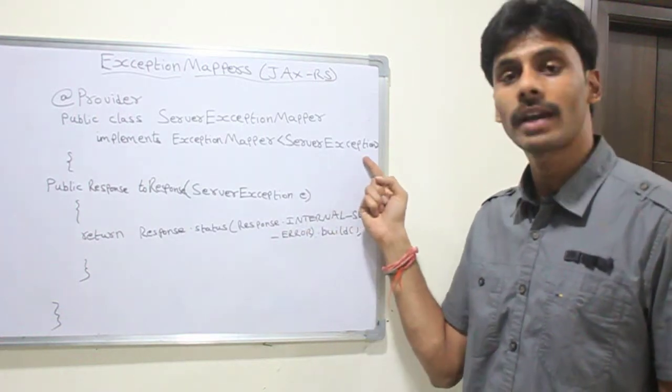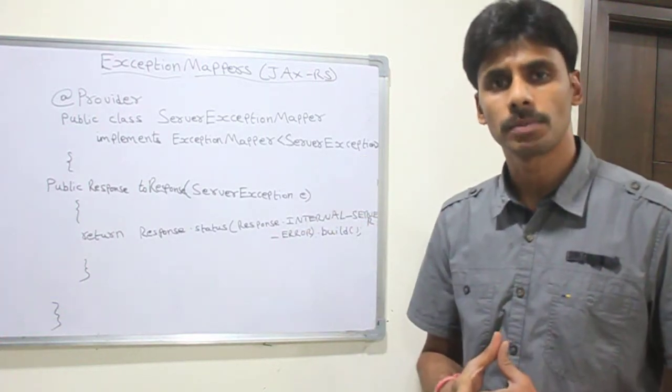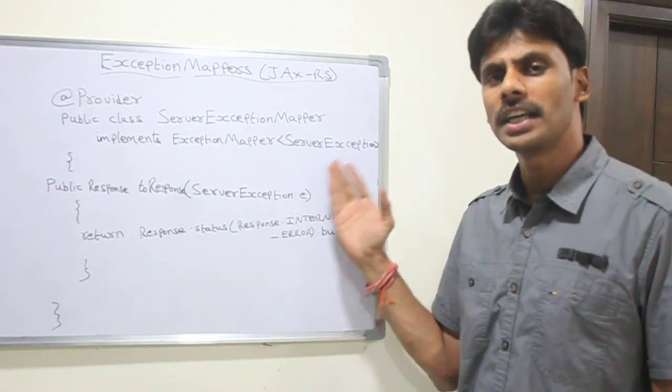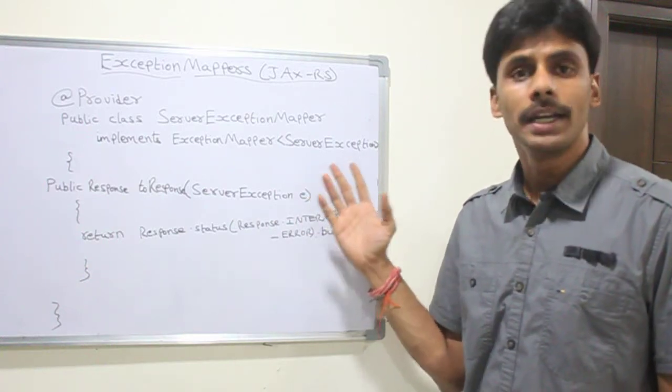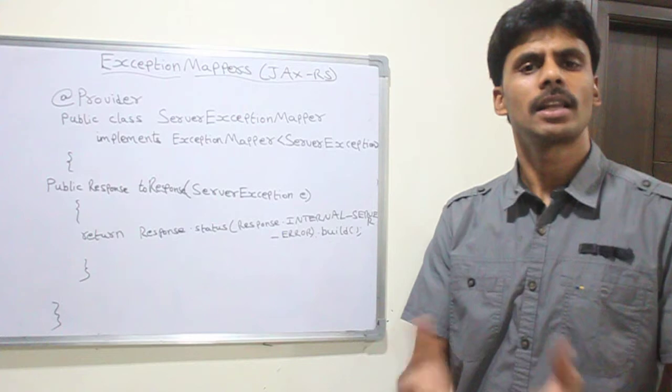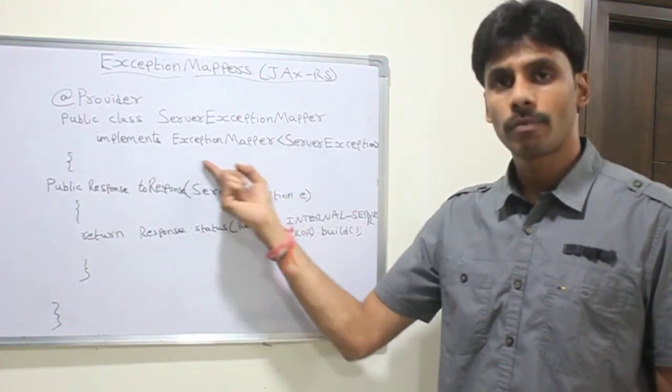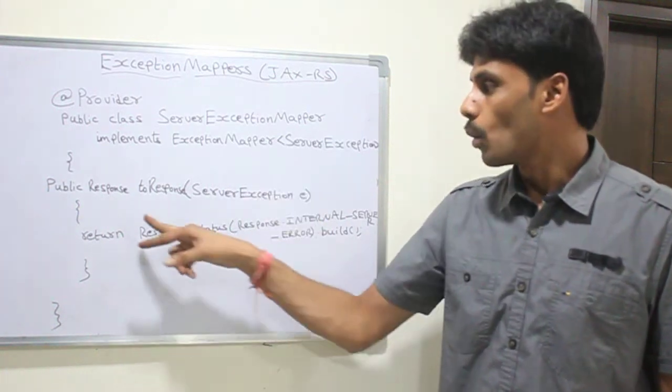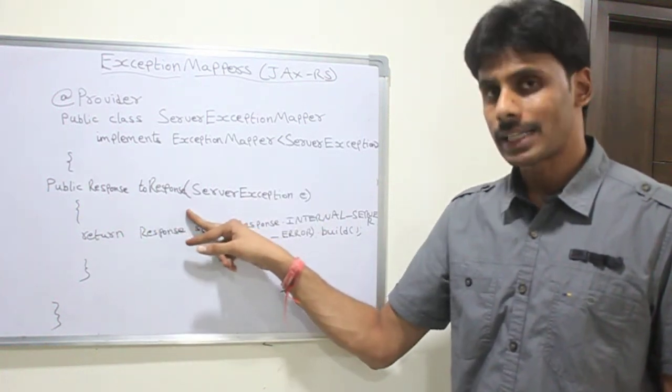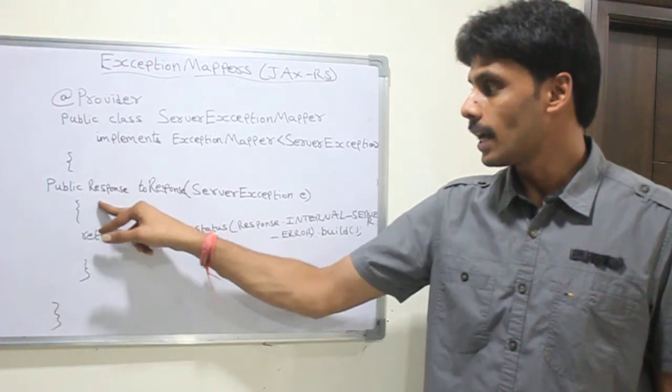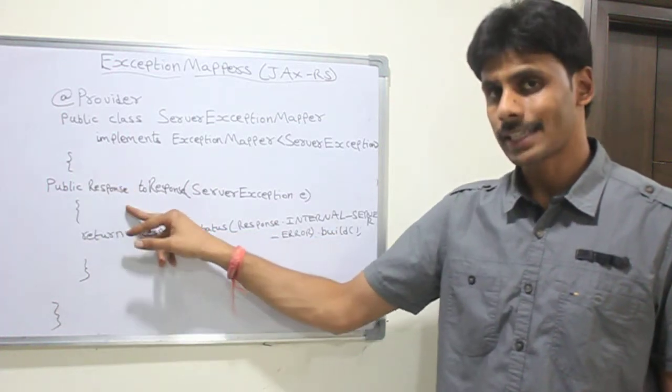In my case, I am handling a ServerException which is an internal application exception. You can handle EntityNotFoundException, EntityExistsException, or any other business exception of your own. You just define it here as a generic type for ExceptionMapper and you override the method called toResponse which returns a response object in the JAX-RS API.